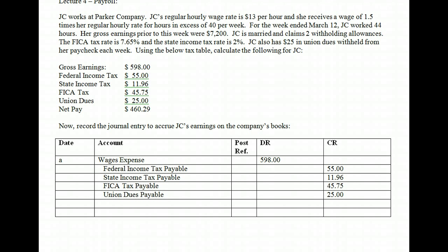That brings us to net pay. We're not actually paying yet — it's not payday — so it goes into wages payable. The amount that goes into wages payable is the net pay: the actual amount we owe the employee. So on the employee side, when recording payroll, all of the gross pay goes into wages expense, and all of the taxes we withheld become short-term payables. We put them on our books until we remit them to the appropriate authority — the federal government, the state government, or some other entity.